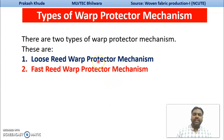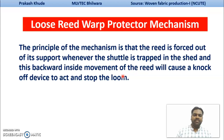There are two basic types of your warp protector mechanism. One is your loose reed and second is your fast reed warp protector mechanism. We will discuss only in this lecture about the loose reed warp protector mechanisms.